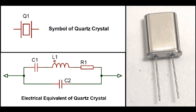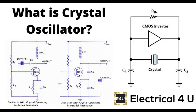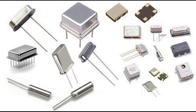The components of a feedback loop include: the input signal applied to the system; the output or response produced by the system; the feedback path through which a portion of the output signal is returned to the input; the summing point where the feedback signal is combined with the input signal; and the controller or processing element that processes the combined signal and generates the system's output.